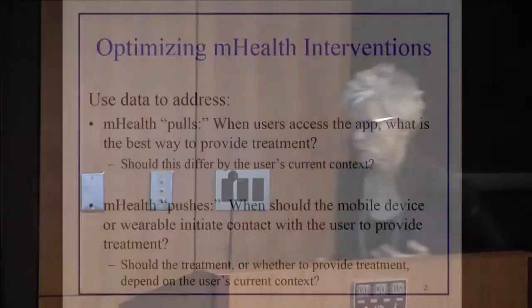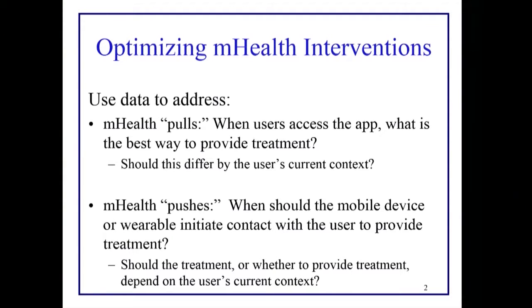Our goal is to use data to address questions that arise in mobile health. In mobile health, you normally have a variety of intervention content on the phone or on a wearable, and the individual decides whether or not they want to access that content. If they do, how do we present it so they find it most receptive? And how should that presentation differ by the current context — the current weather, their level of stress, the social environment they're in?